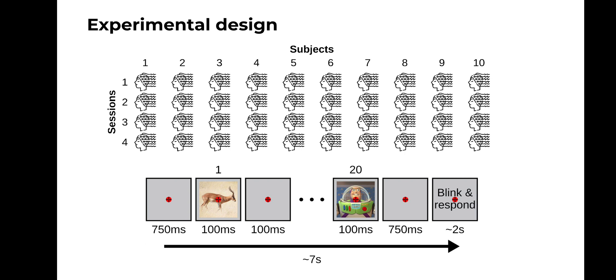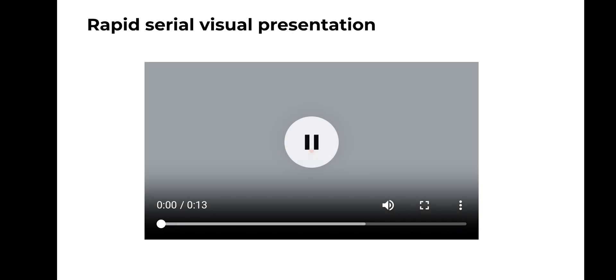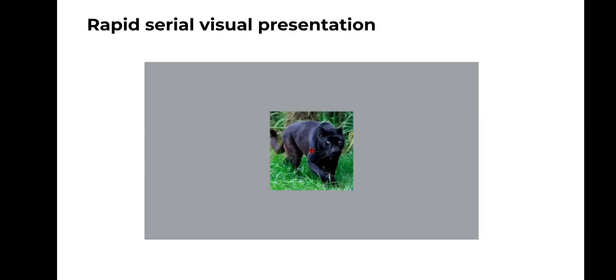The RSVP paradigm consisted of rapid sequences of 20 images, at the end of which subjects were instructed to blink and to report with a key press whether the target image was present in the sequence. This is a short movie of what the experiment was like. You can see that, although the images are changing really fast, you can still recognize the content of each of them.